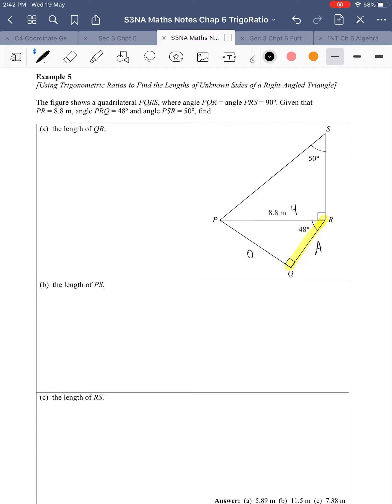I want to find QR, and what I have is PR. So what I have is PR, so A, H, so cosine. Cosine 48 equals QR over 8.8. Now the unknown is on top, so what I have to do is just bring over 8.8, and I'll get QR.